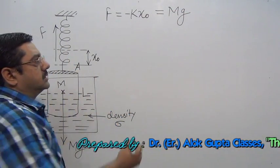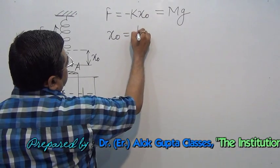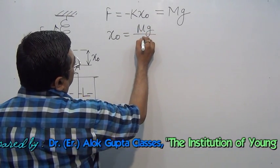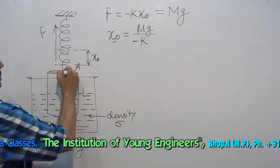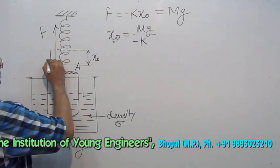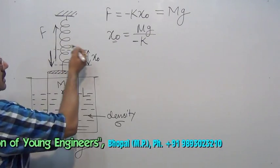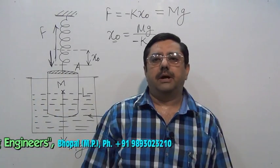What is X naught? X naught would be Mg upon K with negative sign. This will come because extension happened in this direction and restoring force is in the opposite direction. Mg by K.